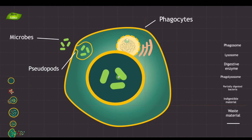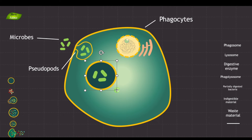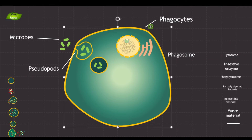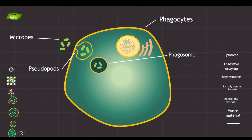Now let's move to the next step. After the microbes are internalized by the phagocyte, what happens is that a membrane-bound structure is created, known as the phagosome. Let me label this — this is our phagosome. The phagosome is a membrane-bound vesicle formed inside the phagocyte when it takes up particles or microorganisms. It serves as a containment area where the ingested material is held.